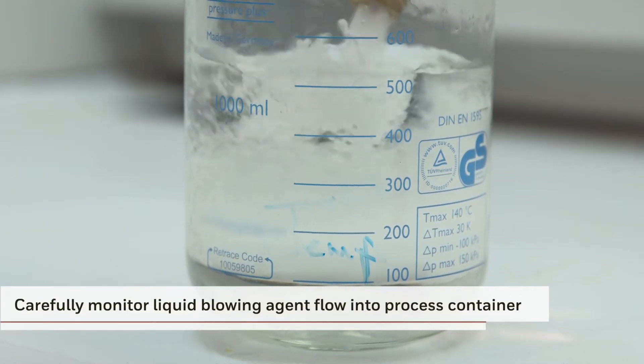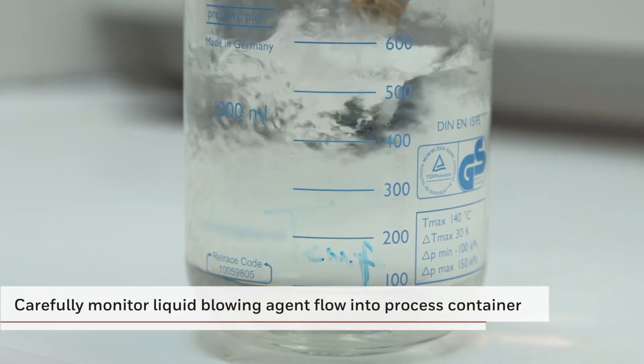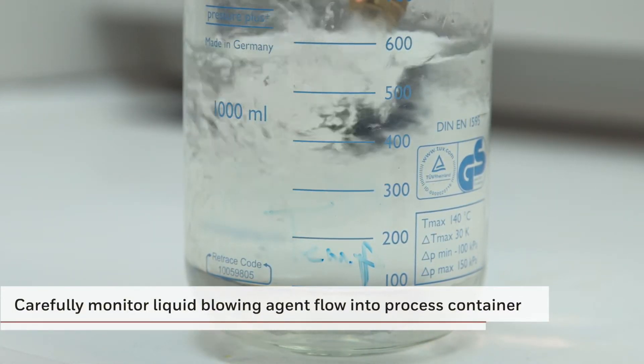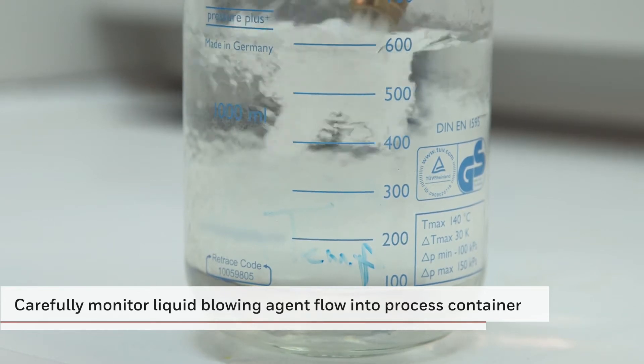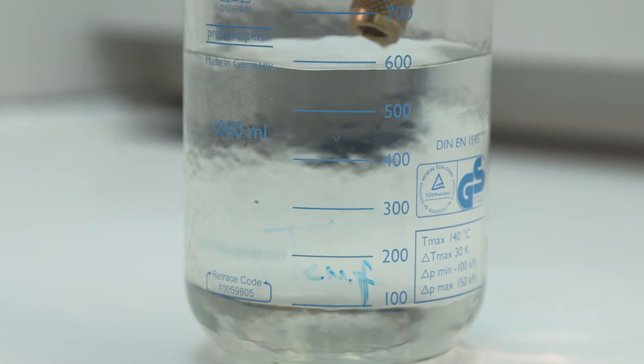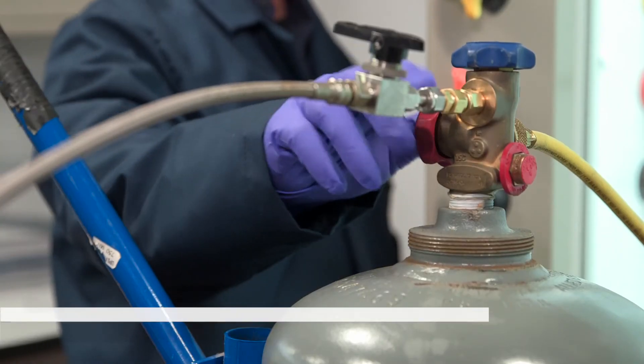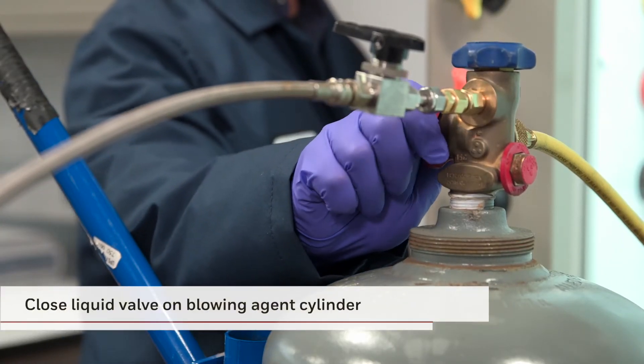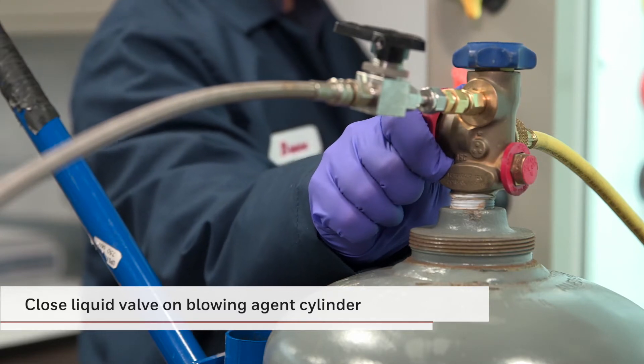Carefully monitor the flow of liquid blowing agent into the process container to avoid overfilling and to reduce the potential for spillage. Once you're satisfied that the blowing agent has been adequately dispensed from the cylinder, close the liquid valve on the blowing agent cylinder to stop any further dispensing of blowing agent.